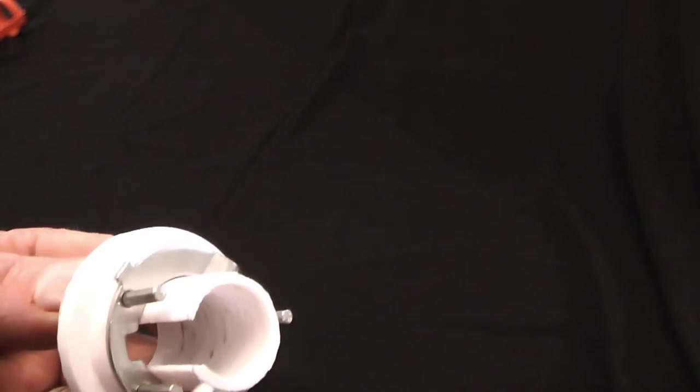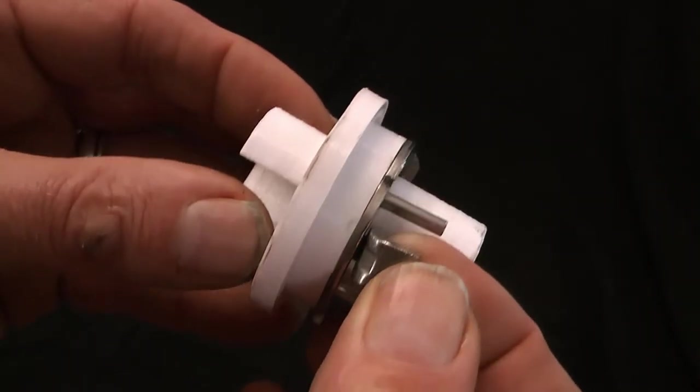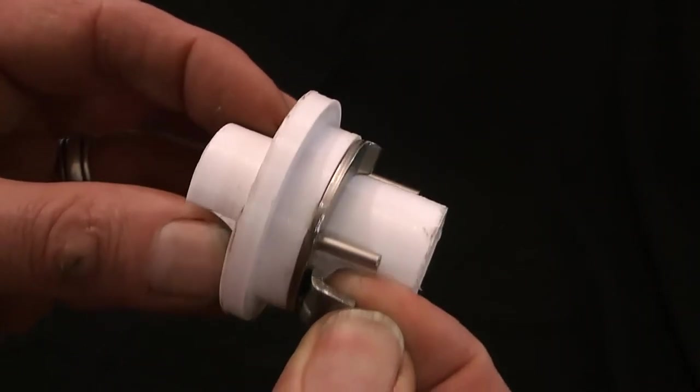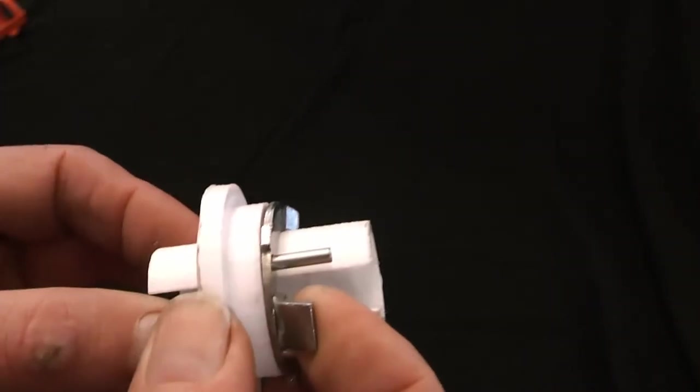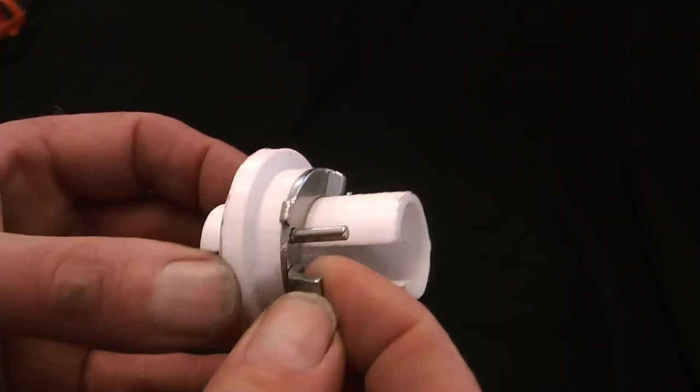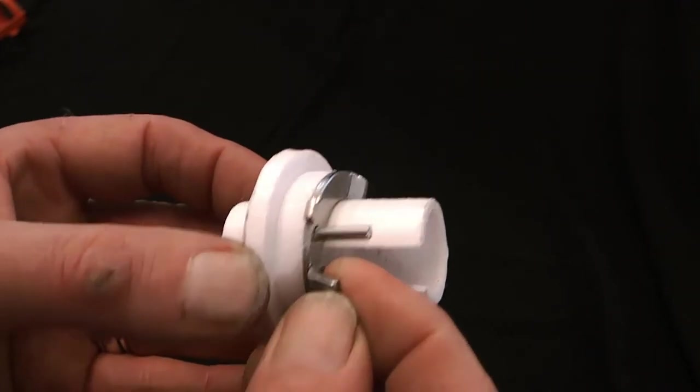And then take the retaining lock and just put it in the recess in this of the sleeve, in between the two pins.